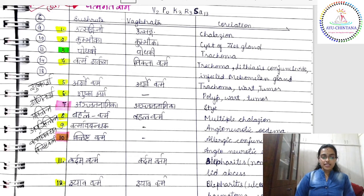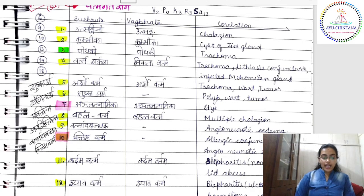In that classification, how many are Sadhya? Like these five Vyadhis — are they Sadhya or Asadhya? All are Sadhya. So Utsangini, Kumbhika, Pothaki, Vartma Sharkara were all Lekhana-type disorders. Through Lekhana we will be doing the Chikitsa. And Arsho Vartma is a Chedana Vyadhi — it comes under Chedana.